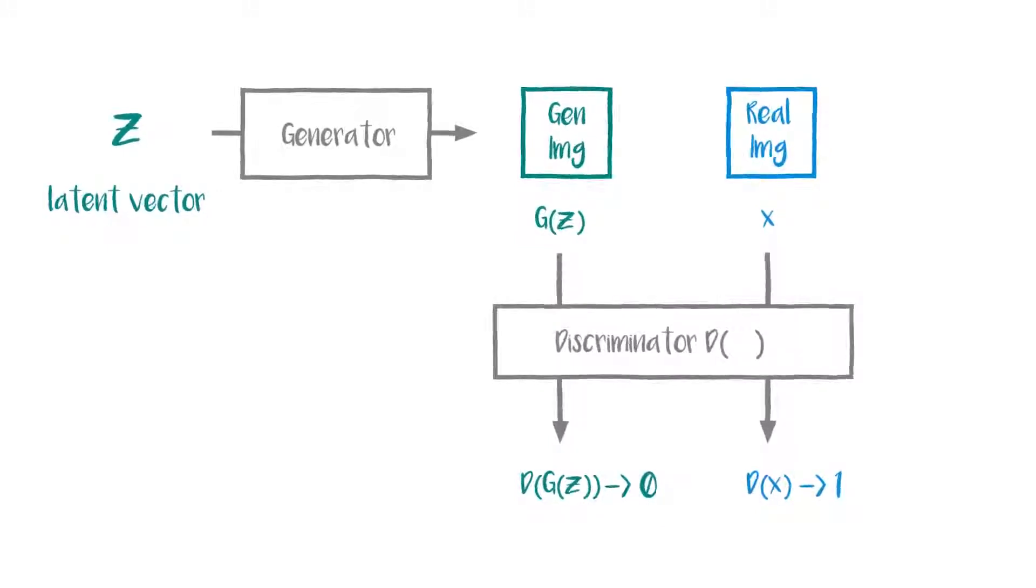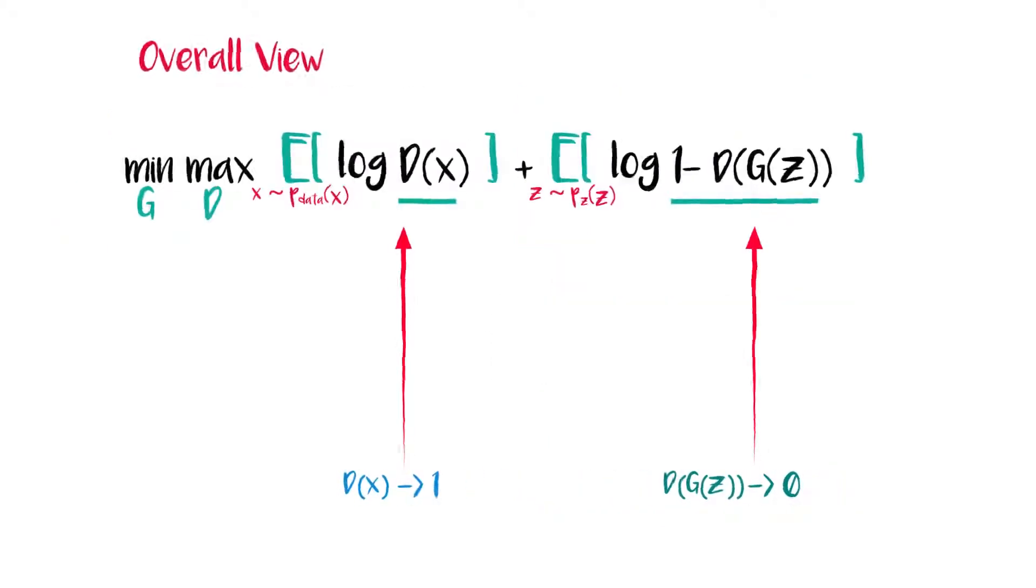How do we do that? We use the log property. If you observe the joint loss function, we're maximizing the discriminator term, which means log(D(G(z))) should inch closer to 0 and log(D(x)) should be closer to 1.